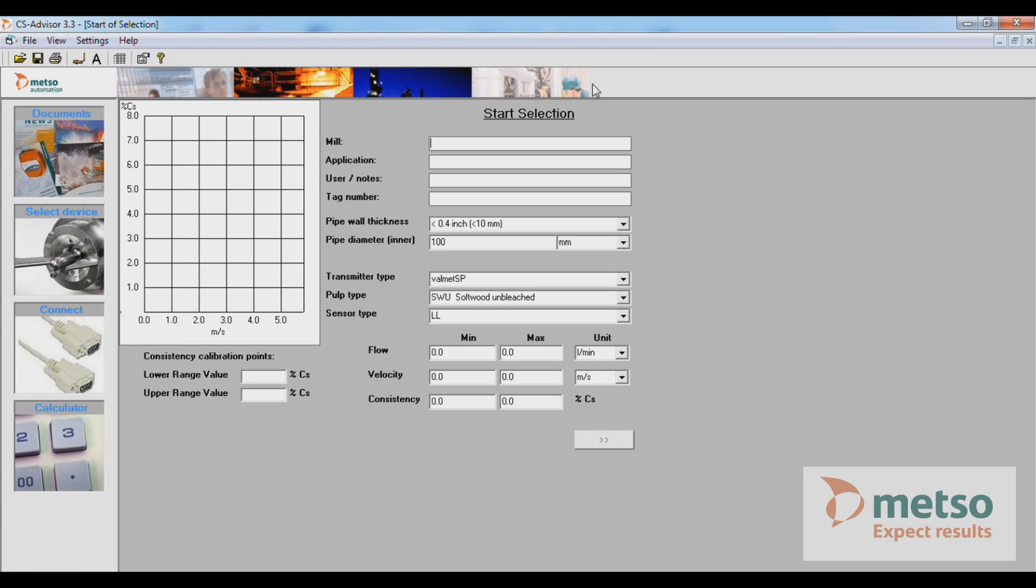The SmartPulp requires laminar or plug flow, which requires a certain amount of straight pipe. To determine straight pipe requirements, you can use Metso's CS Advisor software. And here, we're going to go ahead and begin completing the CS Advisor software to determine the straight pipe requirements.